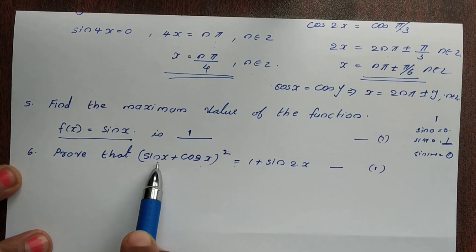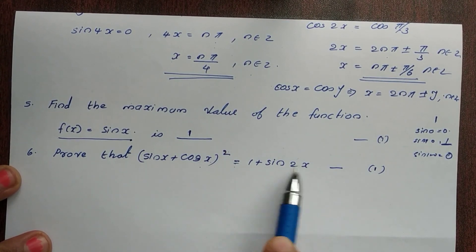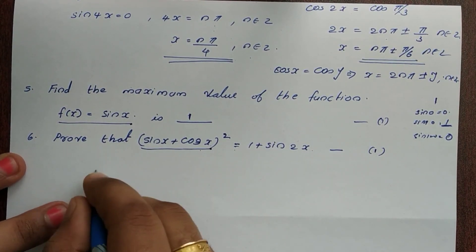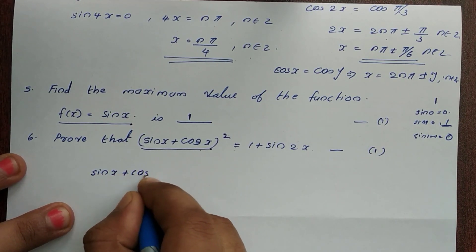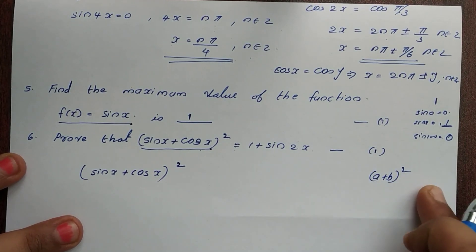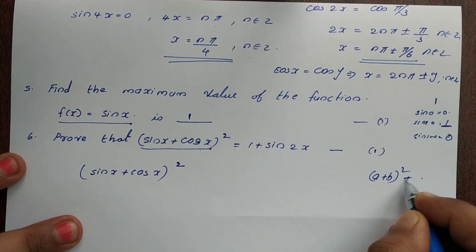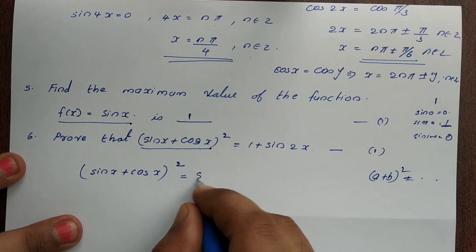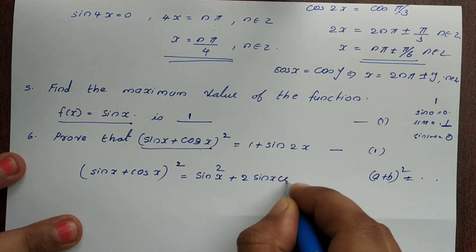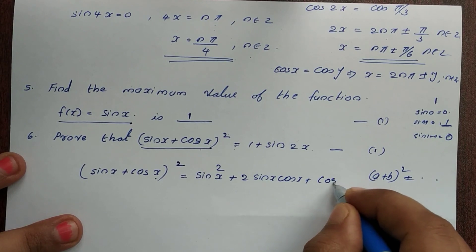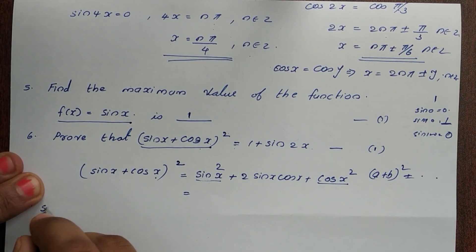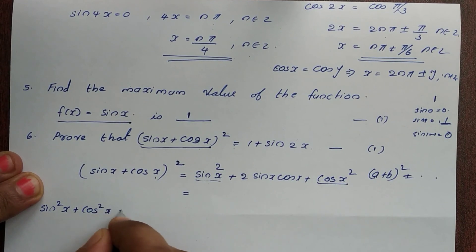The 6th question: Prove that (sinx + cosx)² equals 1 + sin2x. Looking at the LHS, which is (sinx + cosx)², we expand it using the identity (A+B)² = A² + 2AB + B². This gives sin²x + 2sinx·cosx + cos²x. We know that sin²x + cos²x = 1.